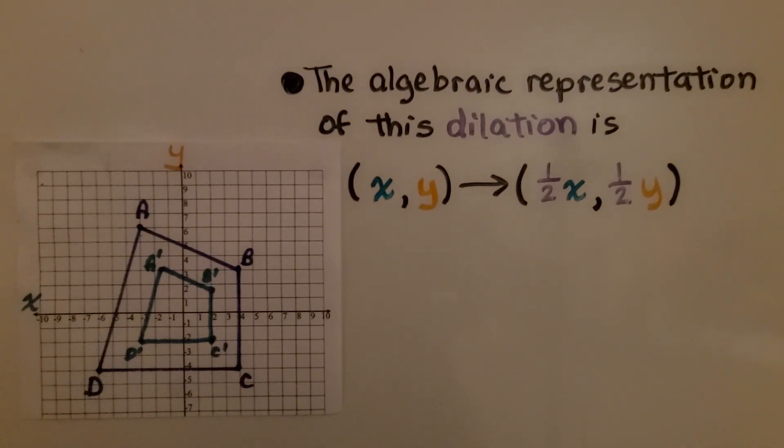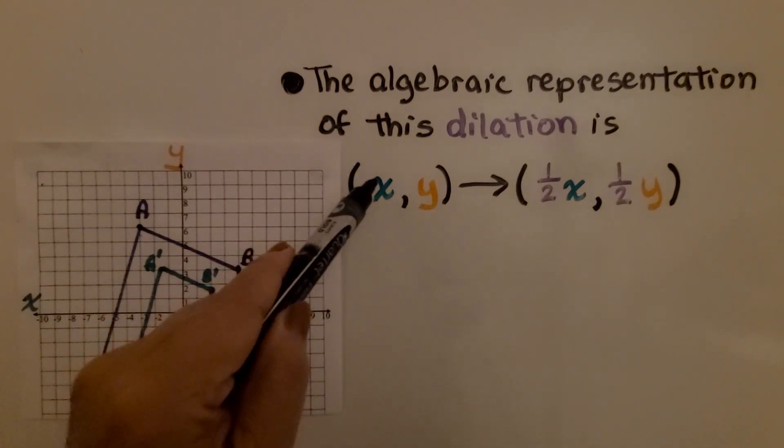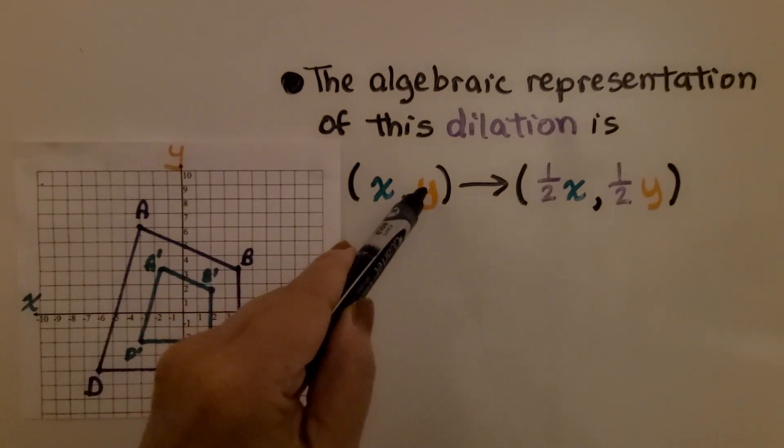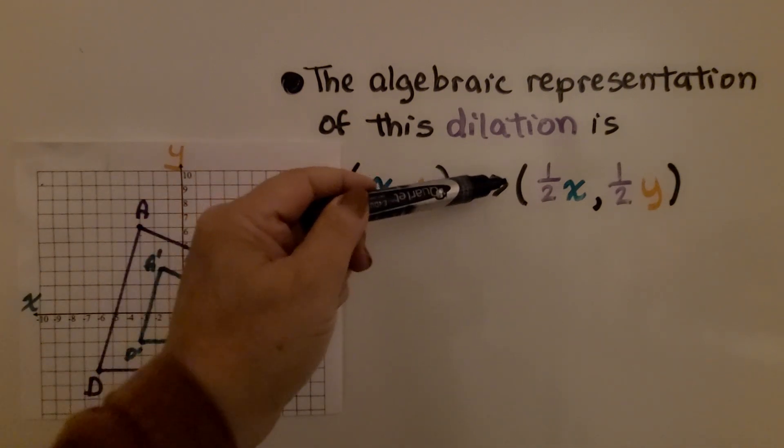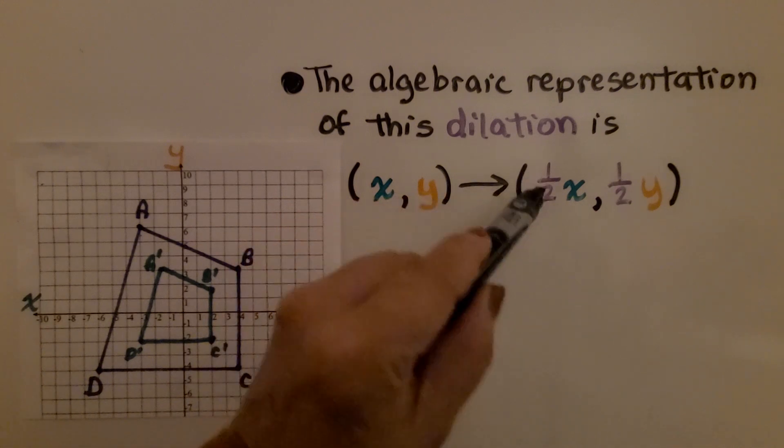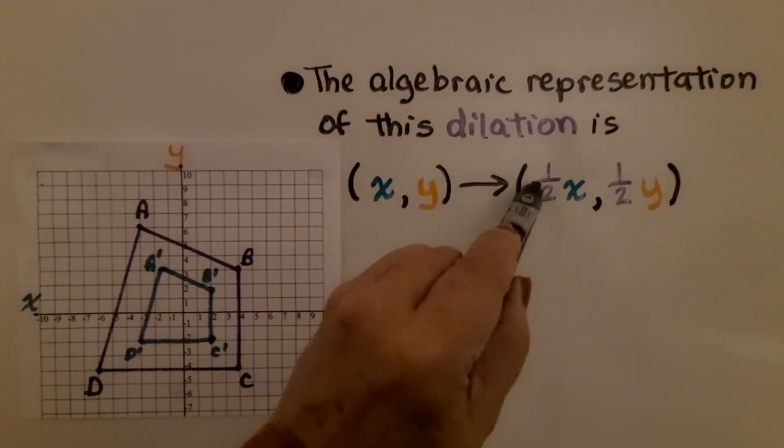The algebraic representation of this dilation is (x, y) with an arrow pointing to the right. And we have another parentheses with the k factor, whatever that is.